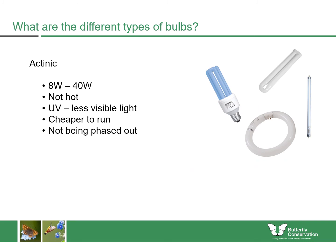Secondly, we have actinic bulbs. These are essentially a fluorescent tube producing actinic light and give off little visible light, making them much less likely to annoy your neighbours. They are usually between 8 and 40 watts, which makes them much cheaper to run than a 250-watt MV bulb. They work by producing more UV light than visible light. They don't get hot and won't shatter unexpectedly, making them a safer option. These are not being phased out and are easy to get hold of.